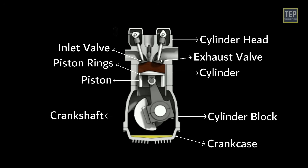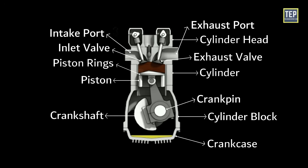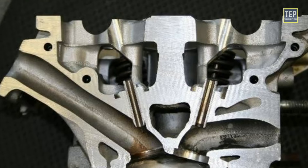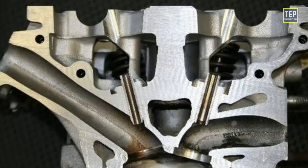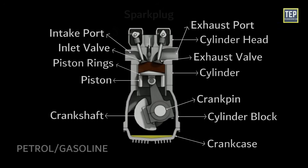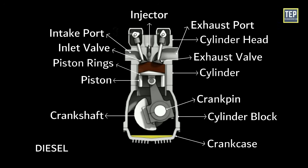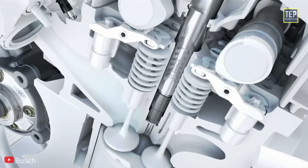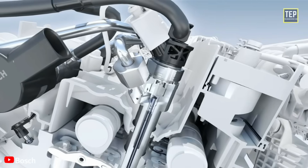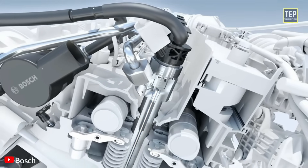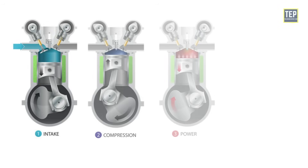Engine valves primarily function to allow air into and out of the cylinder. The crank pin connects the crankshaft to the connecting rod for each cylinder. Intake and exhaust ports are passages cast in the cylinder head leading from the manifolds to the respective valves. For a petrol engine, a spark plug is used to ignite the compressed air-fuel mixture. For a diesel engine, an injector sprays fuel into the combustion chamber at the end of the compression stroke; it is fitted on the cylinder head.